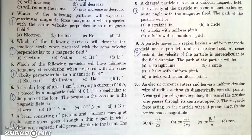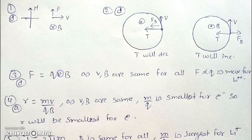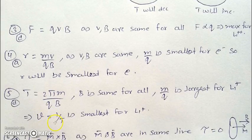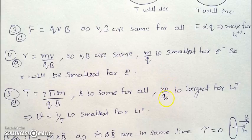In the next question, we have to find which charge will revolve with the least frequency. The time period is given by T = 2πM/QB, and frequency is the inverse of that. So frequency is proportional to Q/M. The particle which has the largest M/Q — which in this case is Li⁺ — will have the least value of Q/M, giving least frequency and maximum time period. So Li⁺ will revolve with the least frequency.